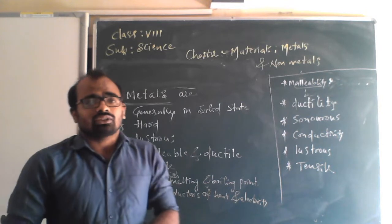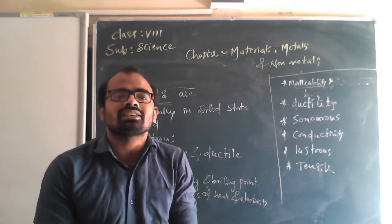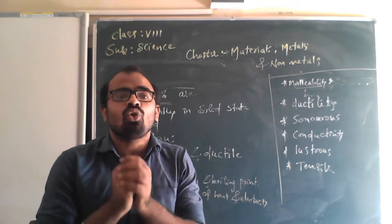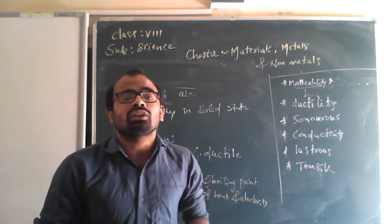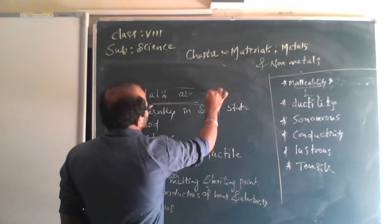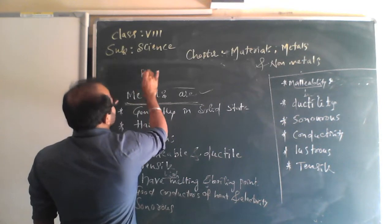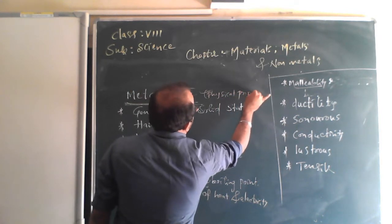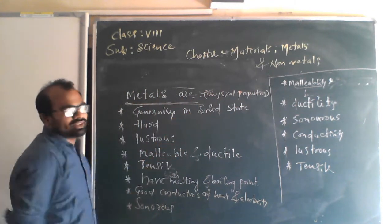Today we start with the properties of metals. The first concept is properties of metals — to which materials we should call a metal. For example, iron is a metal, gold is a metal. What kind of properties do metals have? There are two types of properties: physical properties and chemical properties.